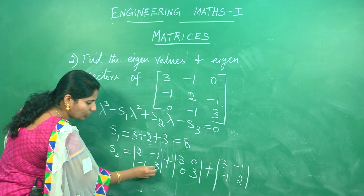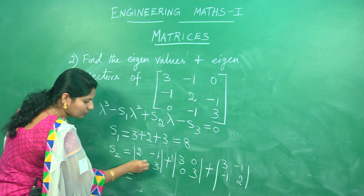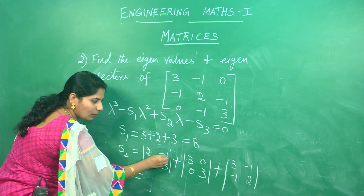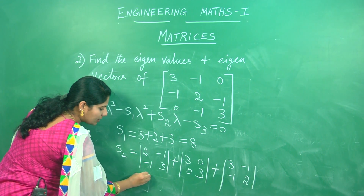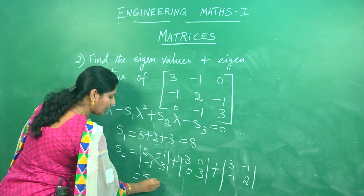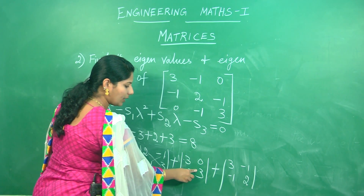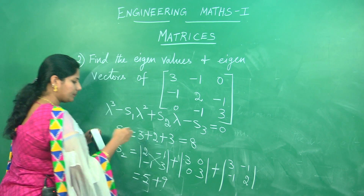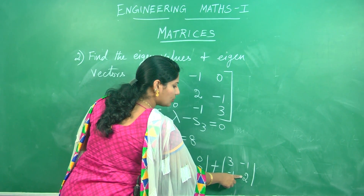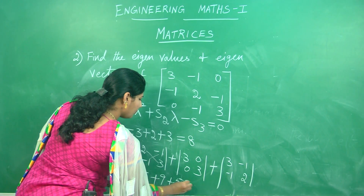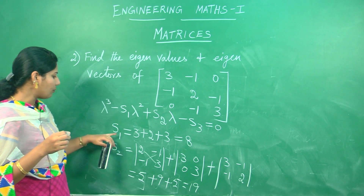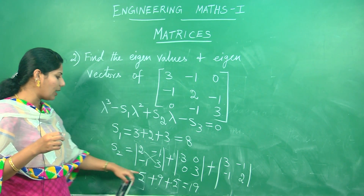Cross multiplication: 2 into 3 is 6, and 6 minus (minus 1) gives plus 1, so 6 minus 1 gives you 5. Similarly, the next one: 3 into 3 is 9, and 9 minus 0 is 9. The next one: 3 into 2 is 6, 6 minus 1 is 5, which gives S2 as 19. We have got S1 as 8 and S2 as 19.